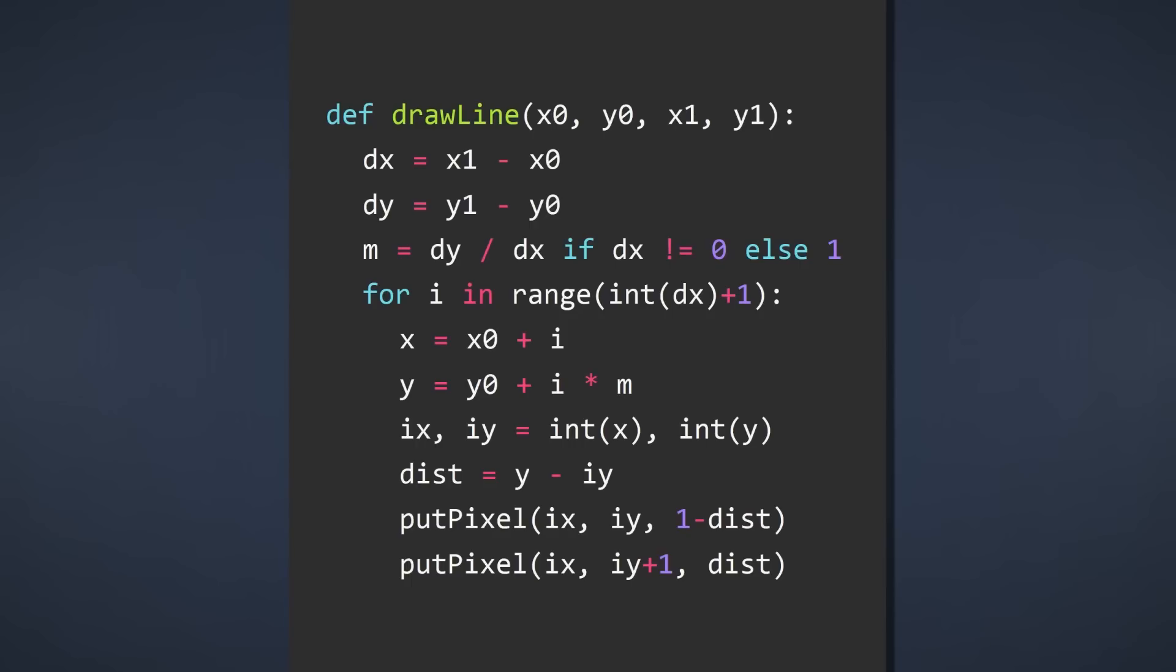However, we still need to fix some stuff. First of all, the algorithm only works in a single quadrant. Here's a test application I wrote, which draws a line from the center of the screen to my mouse cursor. See, if I move anywhere into the quadrant at the top or bottom, the line is all bugged out. And if I move to the left quadrant, there's no line at all.